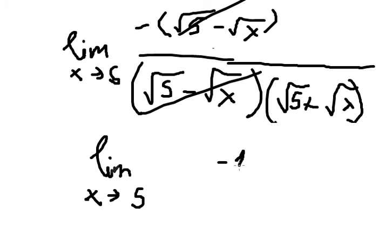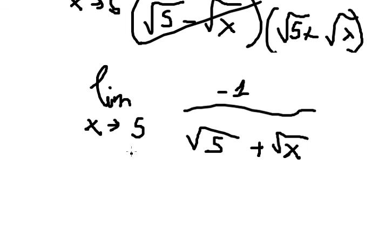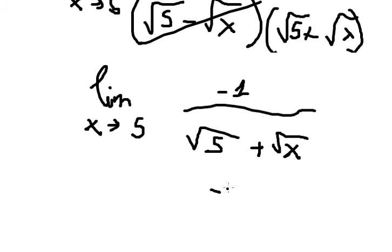After simplifying, we get negative 1 over (√5 plus √x). Substituting x equals 5, we get negative 1 over (√5 plus √5) which equals negative 1 over 2√5. That is the answer.